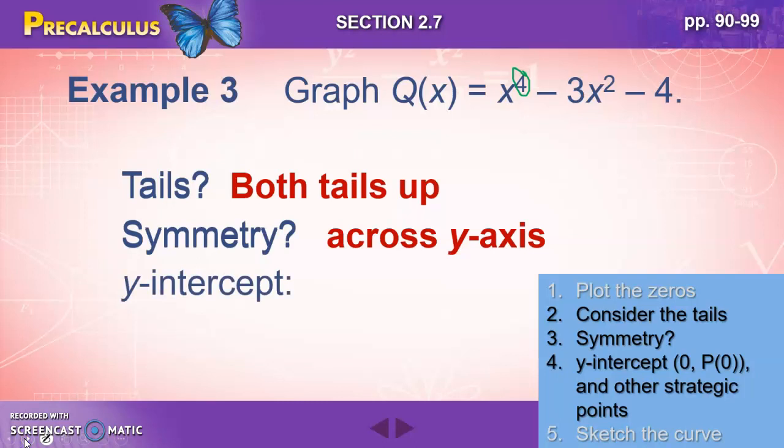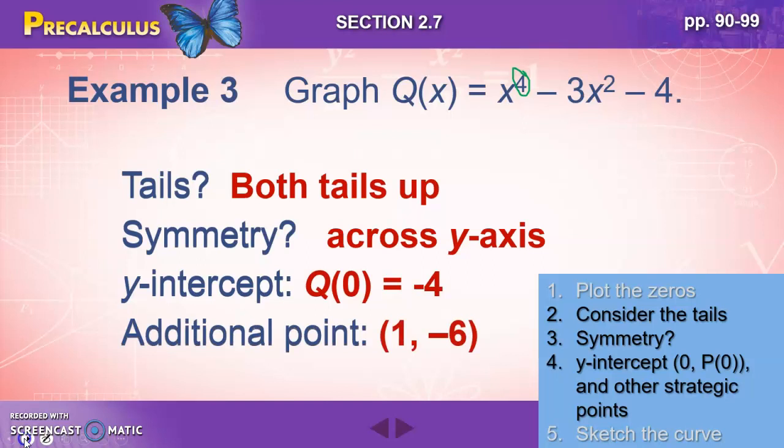And for the y-intercept, when we plug in zero, we get a y-intercept of negative four. An additional point we may want to try is one. When we plug in one, we get negative six.